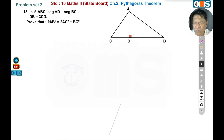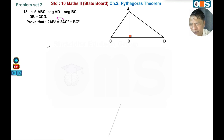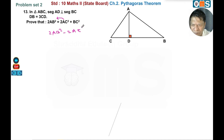So we need to prove that 2AB square is equal to 2AC square plus BC square. This means 2AB square minus 2AC square is equal to BC square.